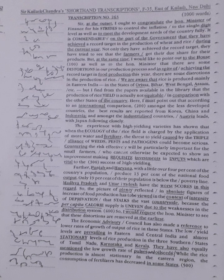The experience with high yielding varieties has shown that when the ecology of the rice field is changed by the application of more water and fertilizer, the threat to yield caused by the triple alliance of weeds, pests, and pathogens could become serious. Countering the risk effectively will be particularly important for the small farmers who cannot otherwise be expected to make requisite investments in inputs which are vital to the success of high yielding.